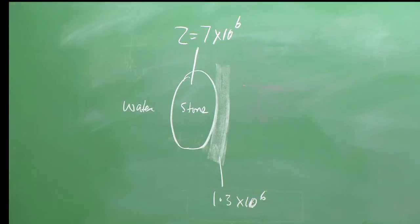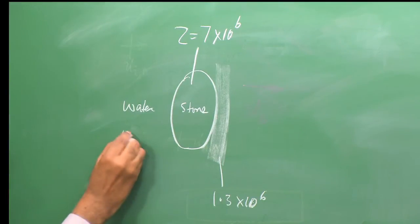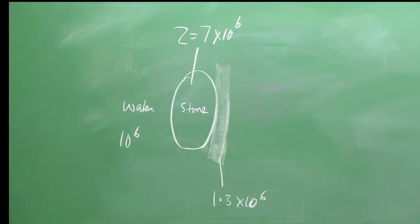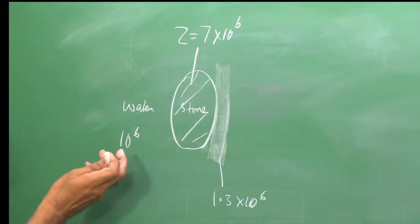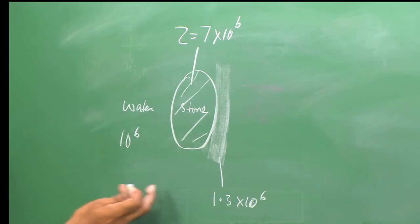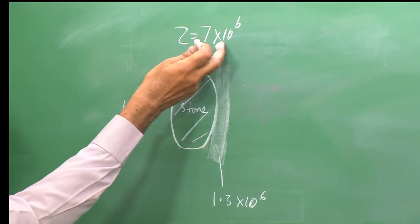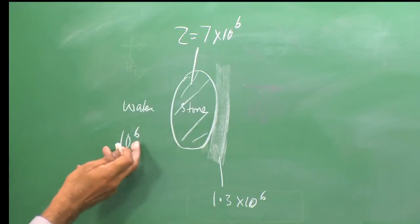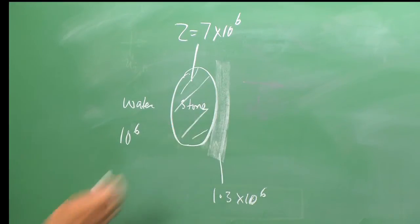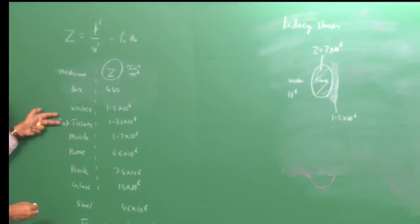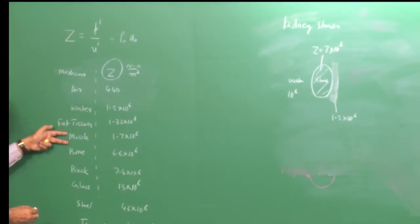The stone has a higher impedance — similar to bone, around 7 × 10⁶ N·s/m³ — compared to the surrounding water (≈1 × 10⁶) and tissue (≈1.3 × 10⁶ N·s/m³).